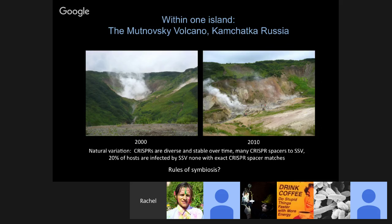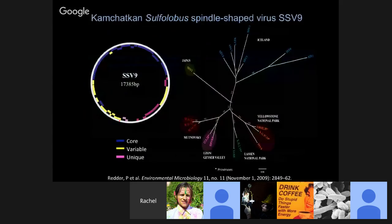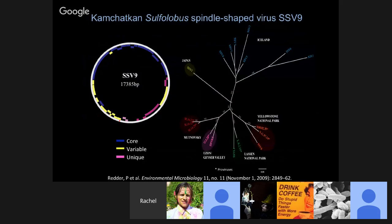We know what those patterns of natural variation are, but we wanted to understand the rules of this symbiosis so we could infer why those patterns look the way they do in this population, and maybe why they look different in the other population. So we decided to focus on one virus: SSV-9. This is its genome — about 17 KB. SSVs, like their hosts, are geographically isolated, with different populations in different locations, and this one is from Kamchatka.